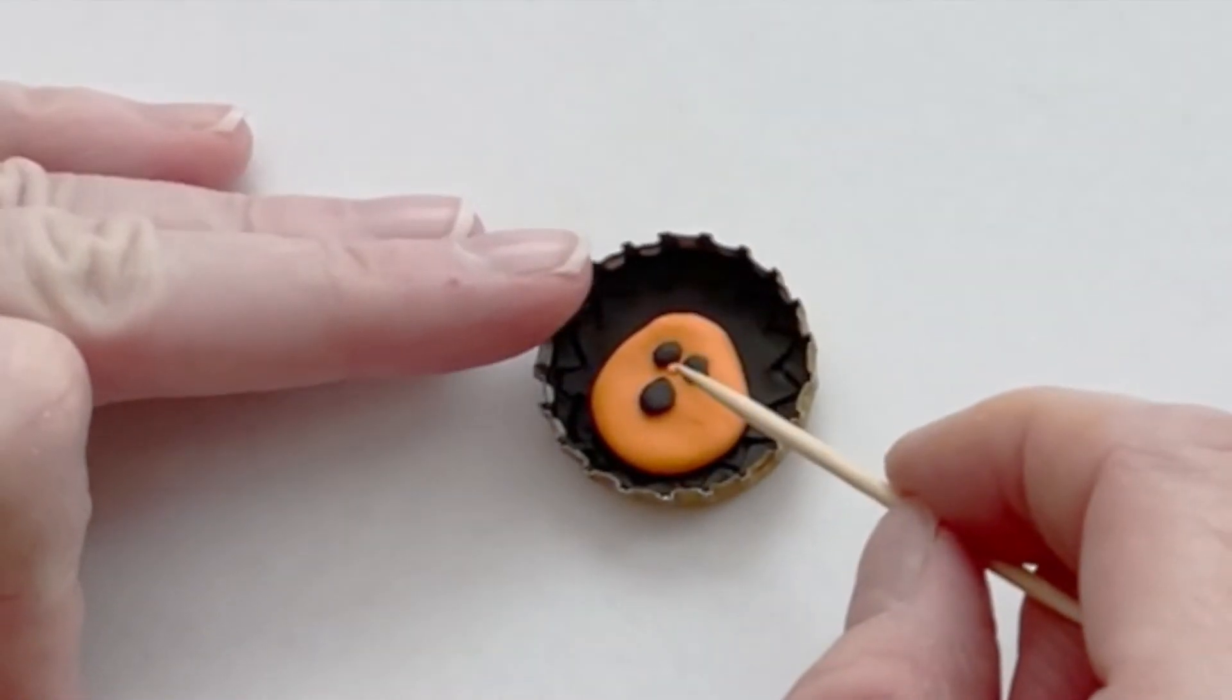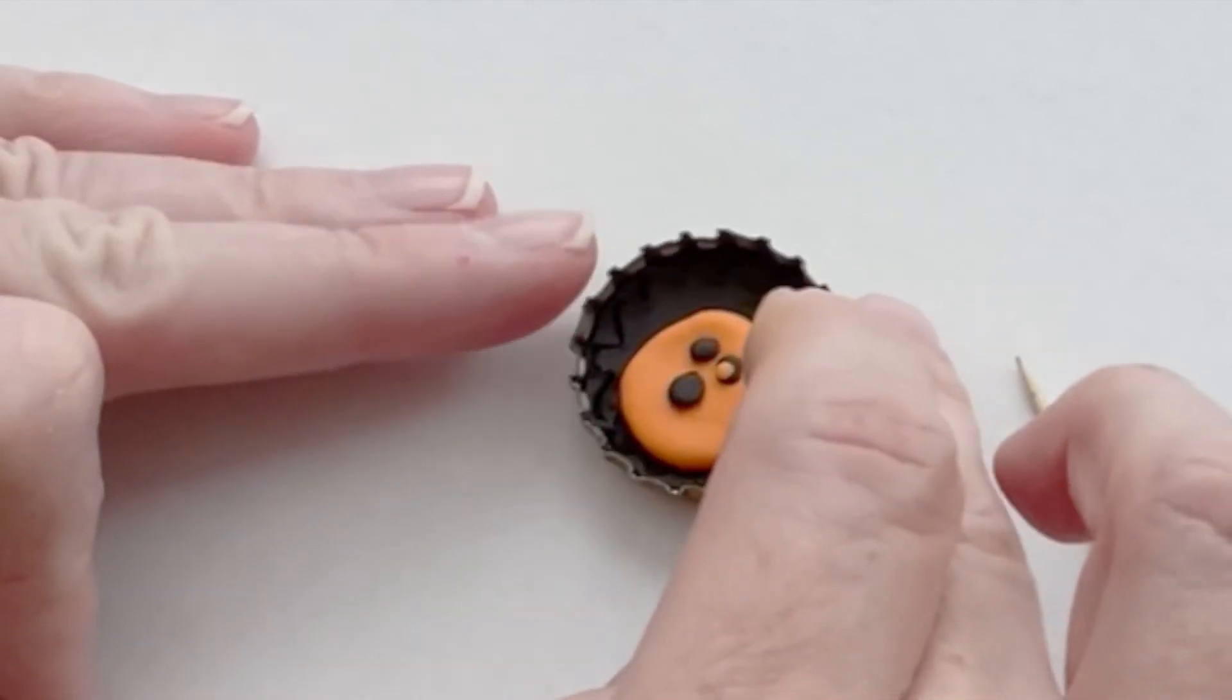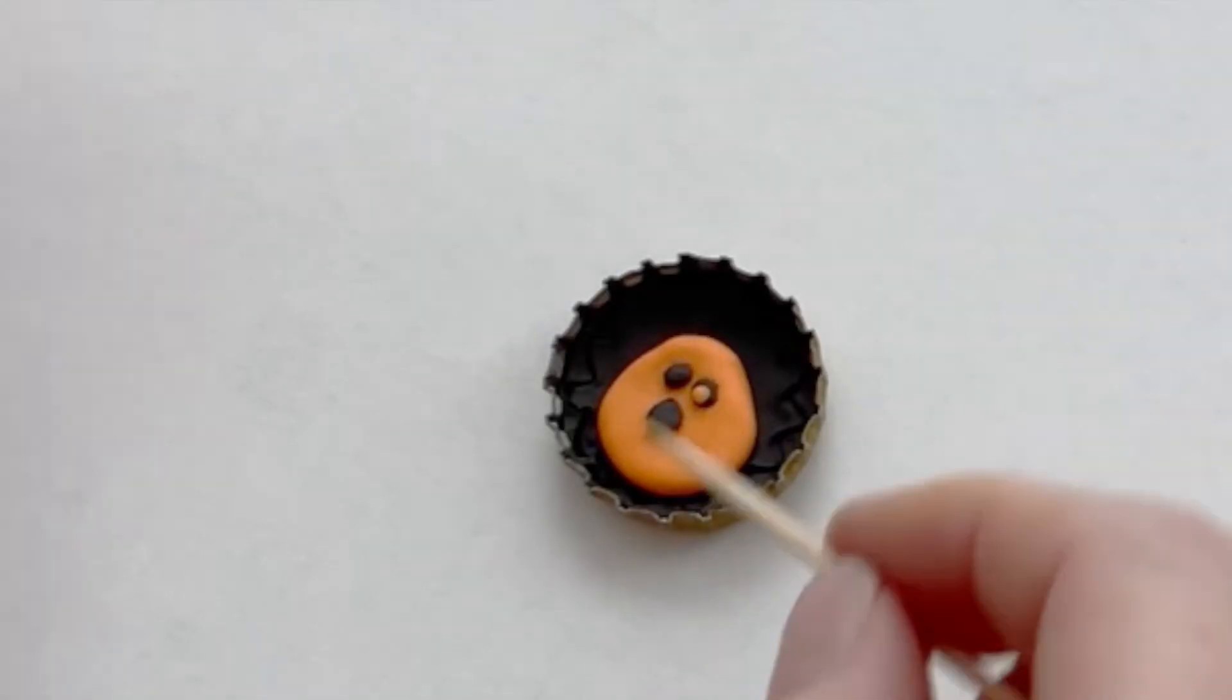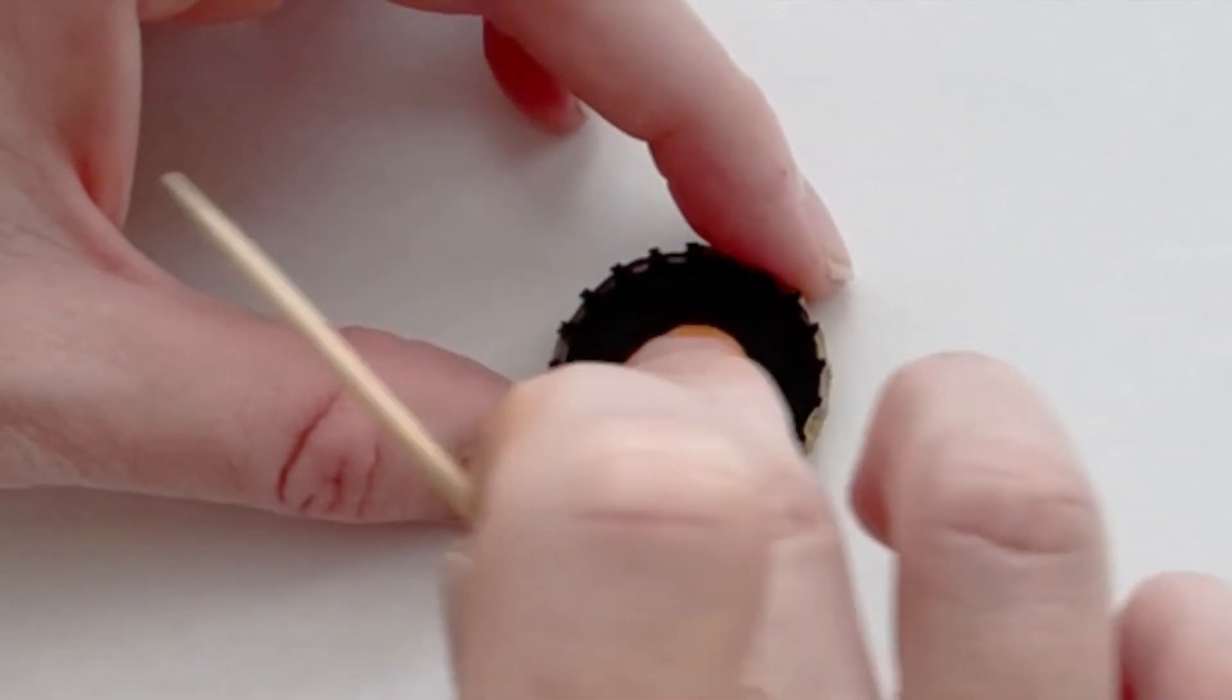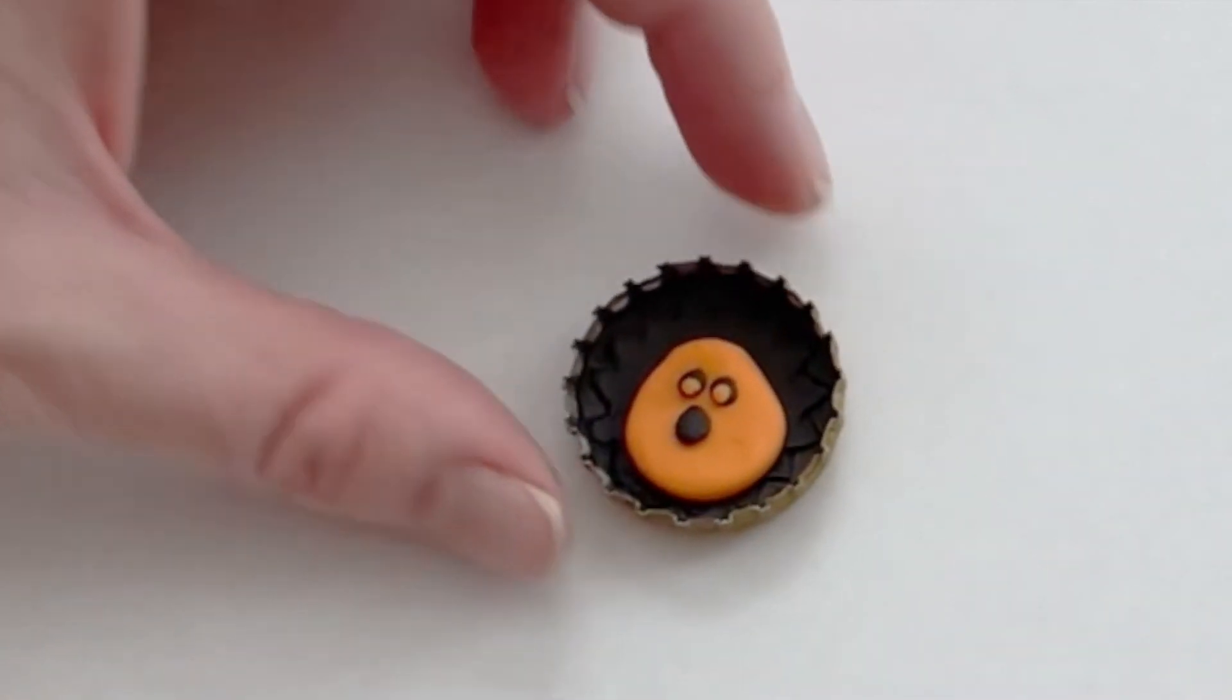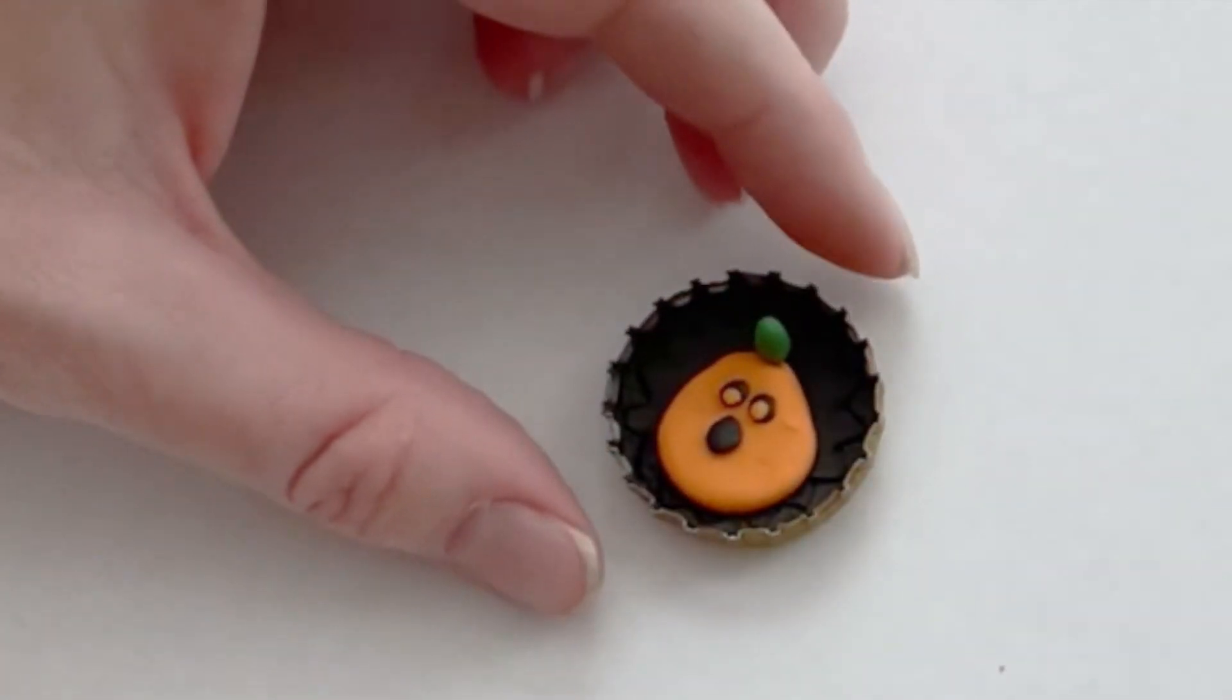Make the tiniest balls of orange clay that you can to make some highlights in the eyes. A toothpick will help you place these where they need to be. Press them in slightly with your finger. Add a short green stem.